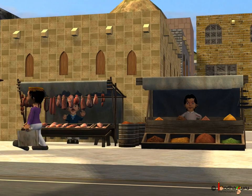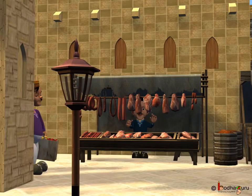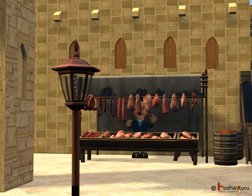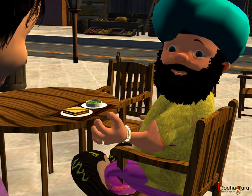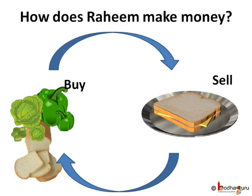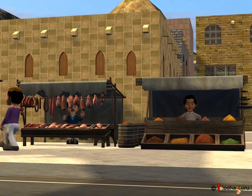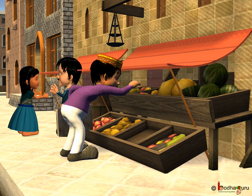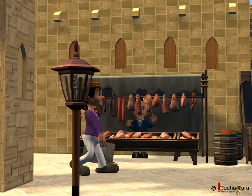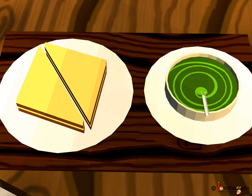How did Rahim do it? Rahim bought vegetables and bread from the market and made tasty sandwiches from it. He sold the sandwiches to make money or to earn money. The next day, he has to buy vegetables and bread again from that money to make more sandwiches.